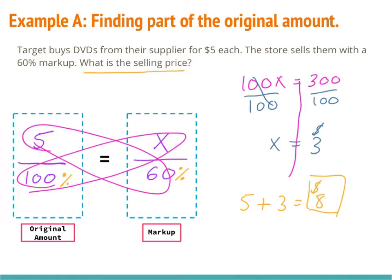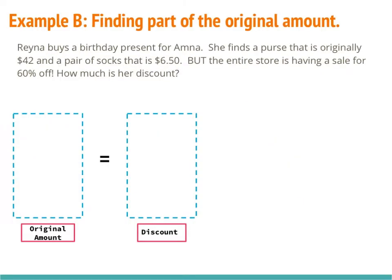Now let's take a look at example B. Raina buys a birthday present for Omna. She finds a purse that is originally $40 and a pair of socks that is $6.50, and the entire store is having a sale for 60% off. So we need to find the original amount, which is going to be 100% of the total price. The discount is 60%, and the percents go on the bottom.